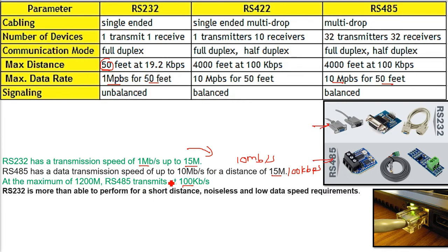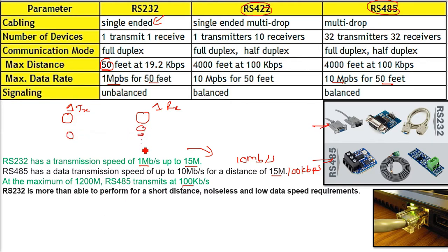Looking at cabling: RS-232 is single-ended, RS-422 is single-ended multi-drop, and RS-485 is multi-drop. In single-ended we have one transmitter and one receiver. In RS-422, we have one transmitter and 10 receivers — that is why it is single-ended and multi-drop. In RS-485, we have 32 transmitters and 32 receivers. Multi-drop means one single connection communicates to multiple parties.